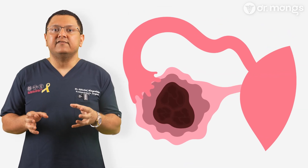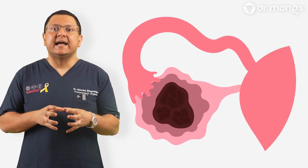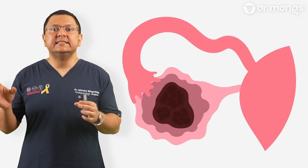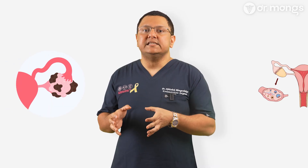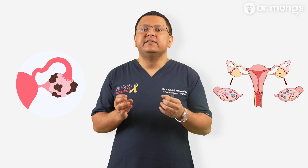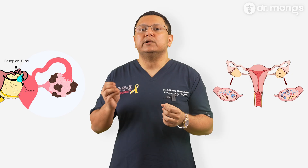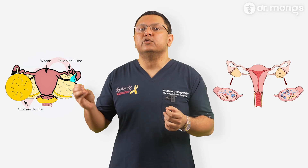Ovarian cysts are fluid-filled sacs that develop in or around the ovaries, and in most cases they are harmless. However, some cysts can grow large, cause pain, or even indicate an underlying condition like endometriosis, PCOS, or in rare cases, borderline or malignant ovarian tumors.